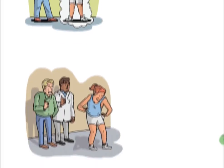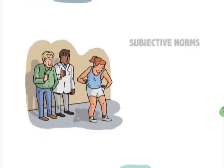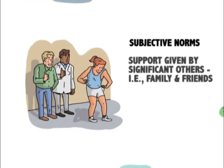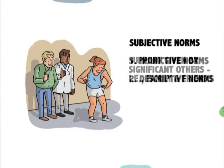The second predictor of intentions is subjective norms, which relates to the support given or not given by family, friends, or significant others, such as a GP. Similar to attitudes, this can be split into two different types: injunctive or descriptive.